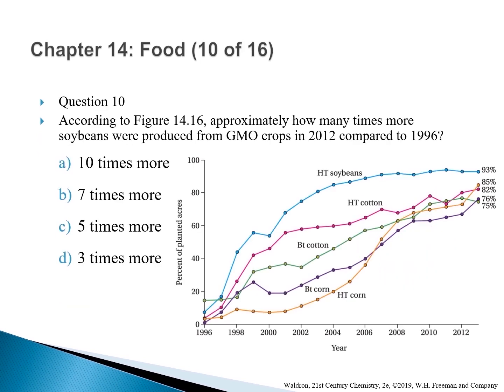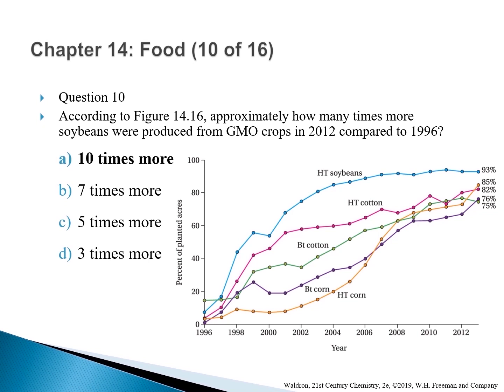Question 10: According to the figure, approximately how many times more soybeans were produced from GMO crops in 2012 compared to 1996? The correct answer is A — 10 times more. Looking at the blue curve for HT soybeans: in 1996 the percentage is just under 10%, while by 2012 it is about 93%. Dividing 93 by a number slightly less than 10 gives approximately 10 times or more.